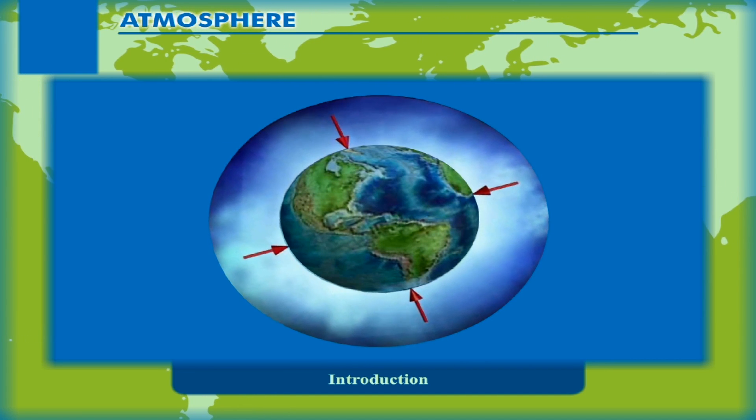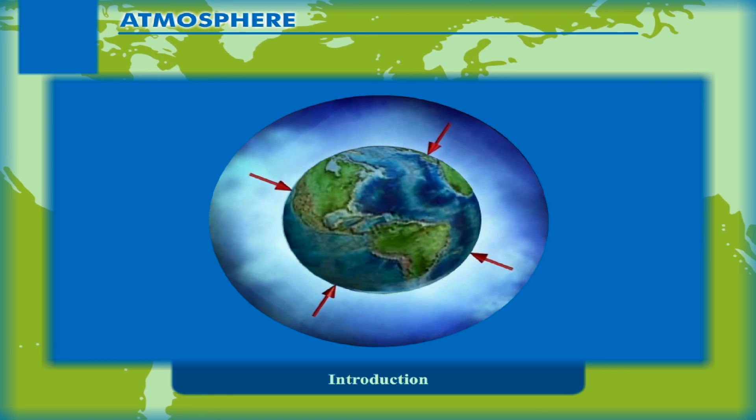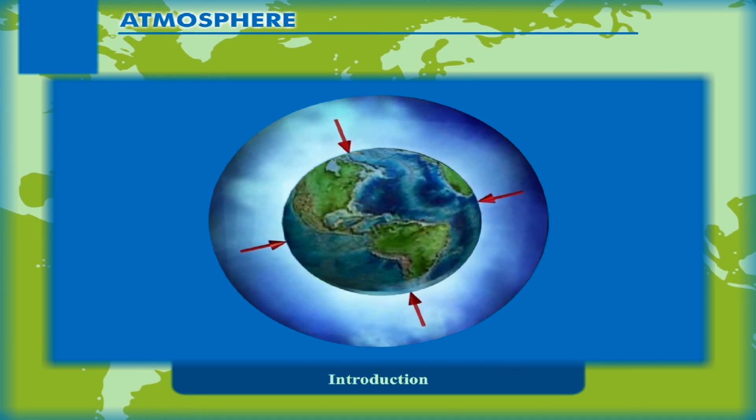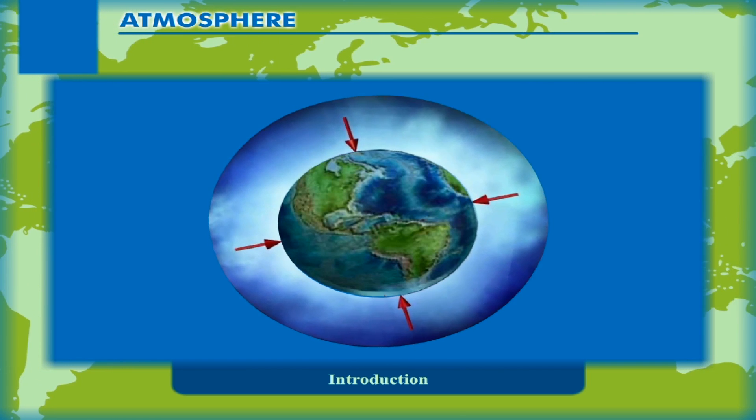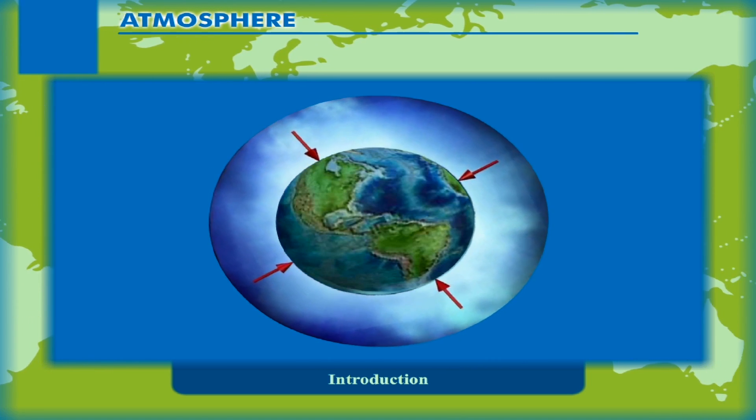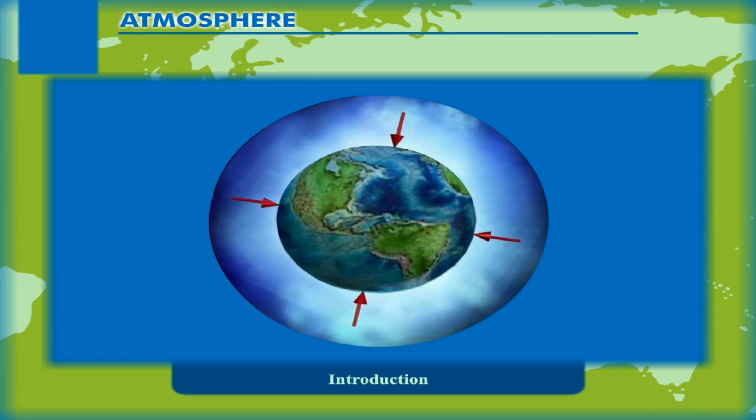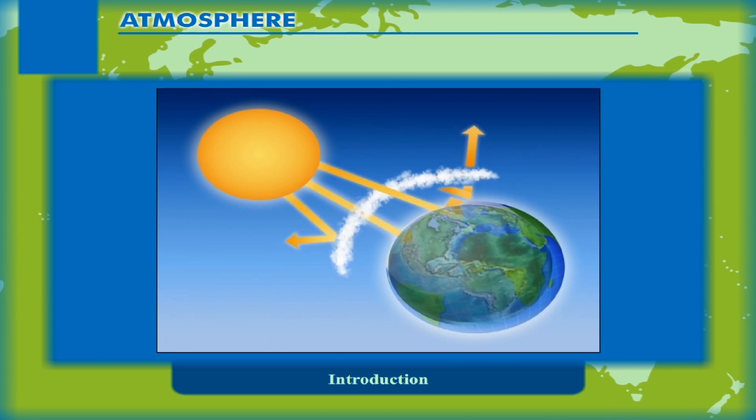The blanket of air surrounding Earth is known as atmosphere. Without air, Earth would have been a lifeless planet. It not only supplies air and water to plants and animals, but also protects them from the harmful rays of the sun.